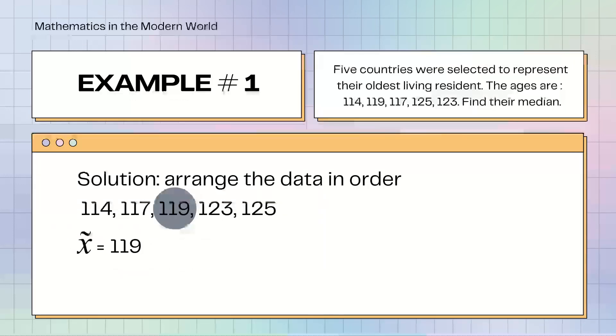Example number 1. 5 countries were selected to represent their oldest living resident. Their ages are 114, 119, 117, 125, 123. Find their median. Una muna natin gagawin ay i-arrange yung data in order from least to greatest: 114, 117, 119, 123, 125. Their median is 119 since siya yung nasa gitna.